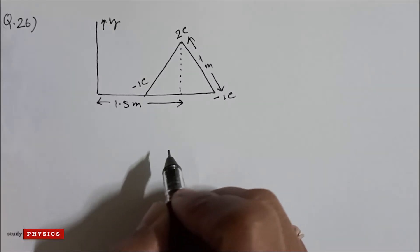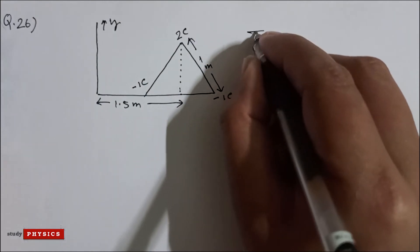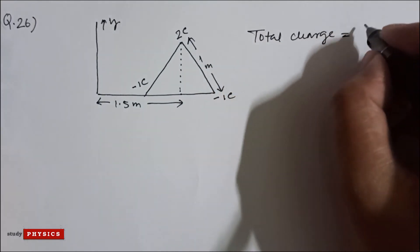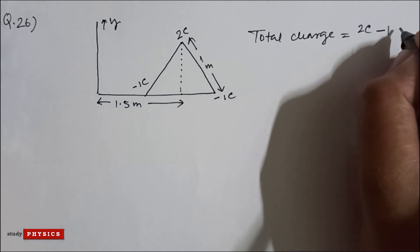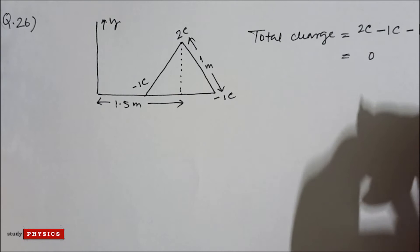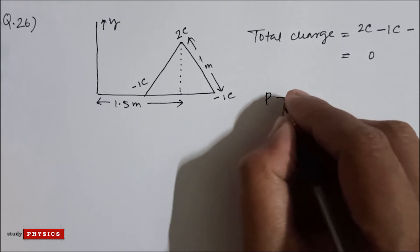So this is the figure. First of all, the total charge here is 2 coulomb minus 1 coulomb minus 1 coulomb, so this is 0. Always remember that when the total charge of the system is 0, then the dipole moment is independent of the origin. We know the dipole moment p is the sum of q times r.